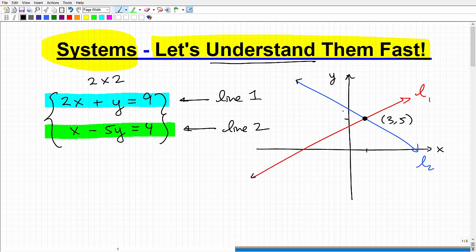So we understand ourselves so far. Let's kind of redo it like this. Inside of a system, you have one line. It's called line one and another line, line two. And the goal is to determine the point where they cross.